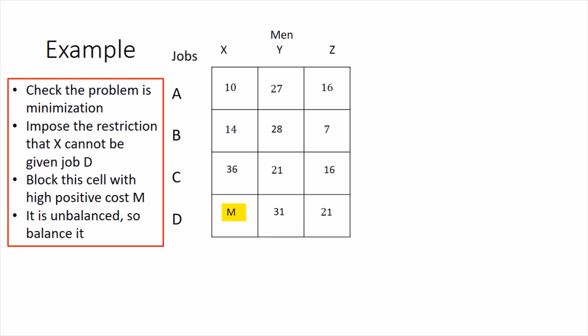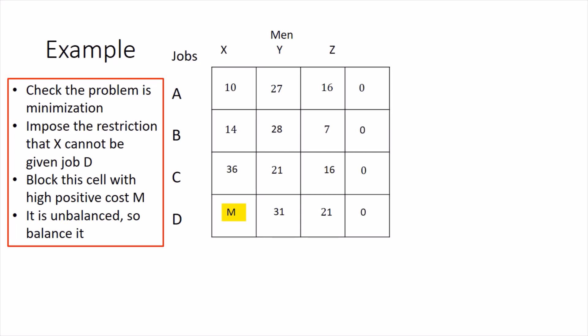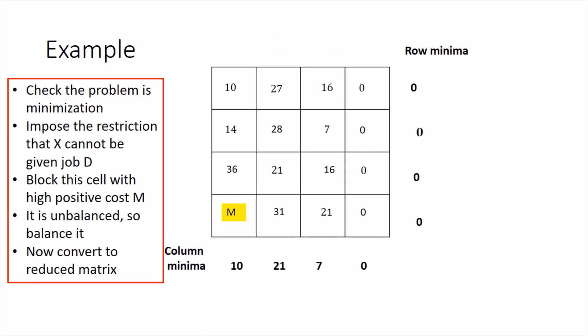Now check: this is an unbalanced problem, so we add a fourth column representing a dummy employee. Then apply the usual Hungarian method to reach the optimal solution. Compute the reduced matrix first by finding row minima and subtracting them, then find column minima to create zeros in the remaining columns.